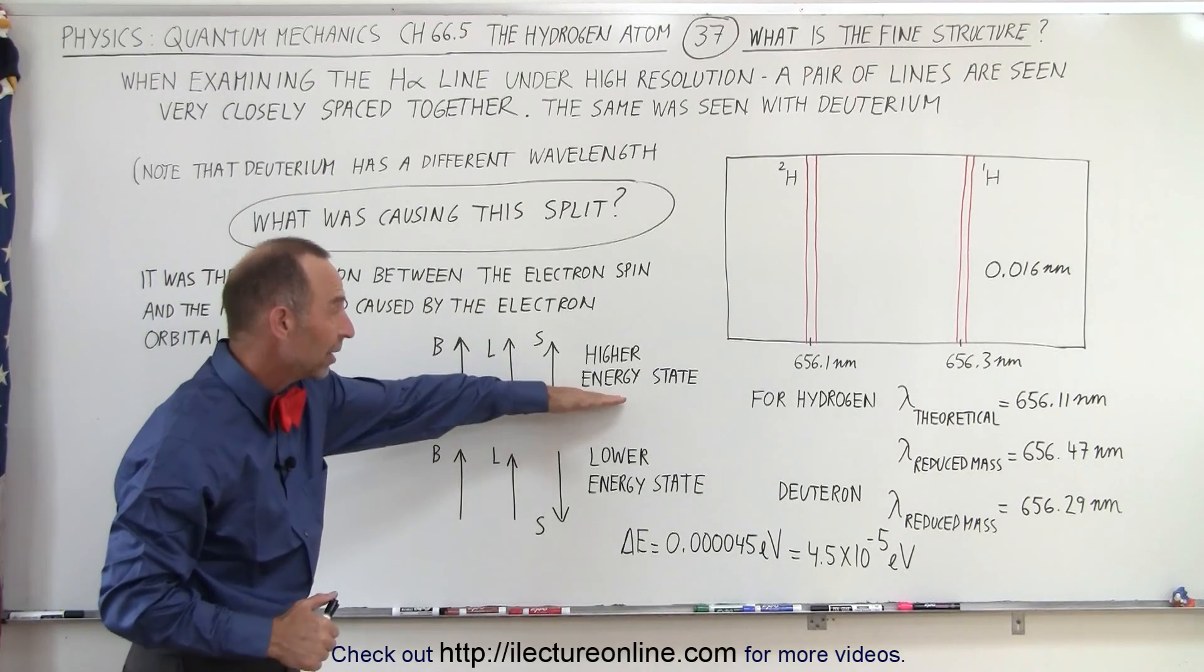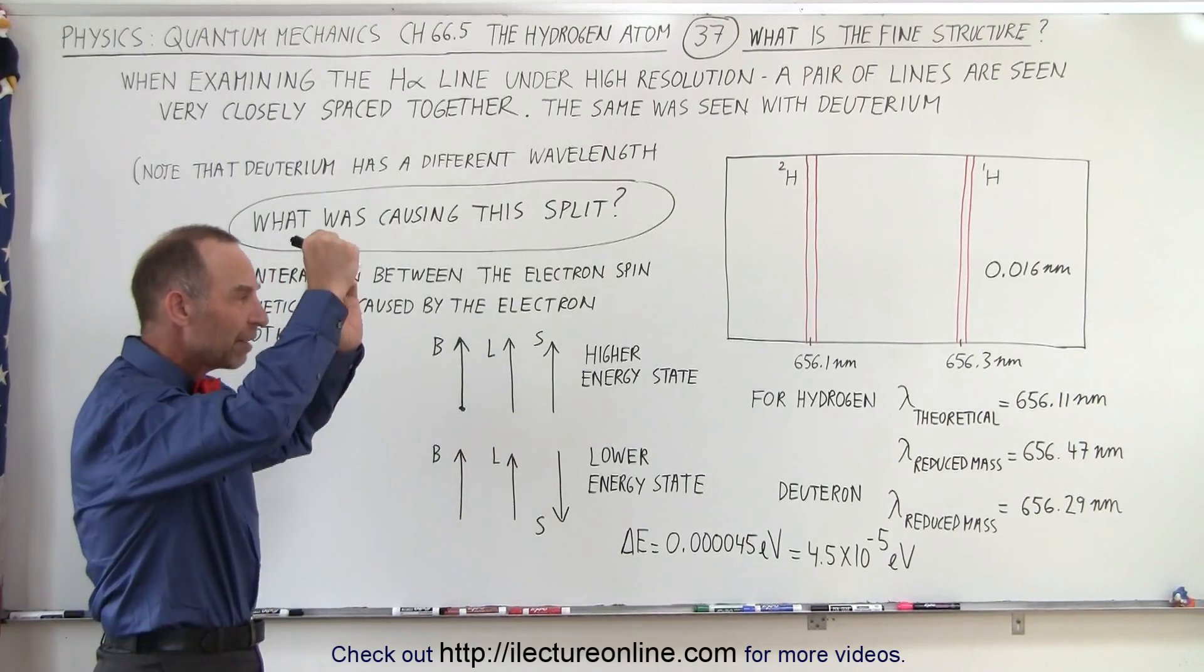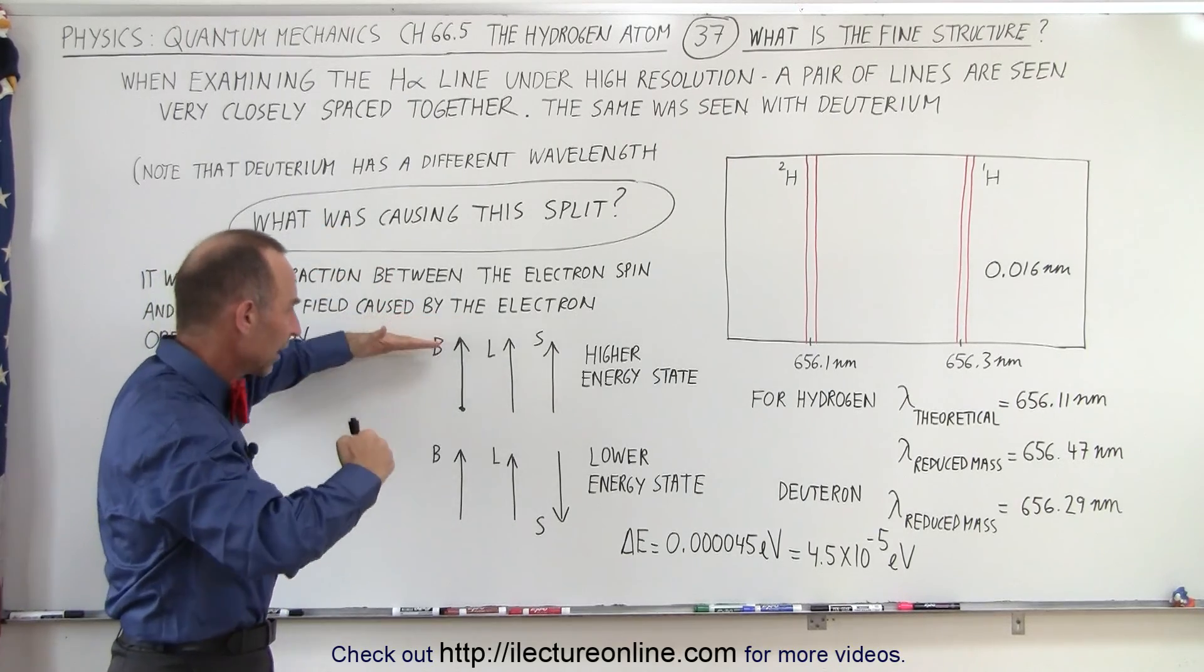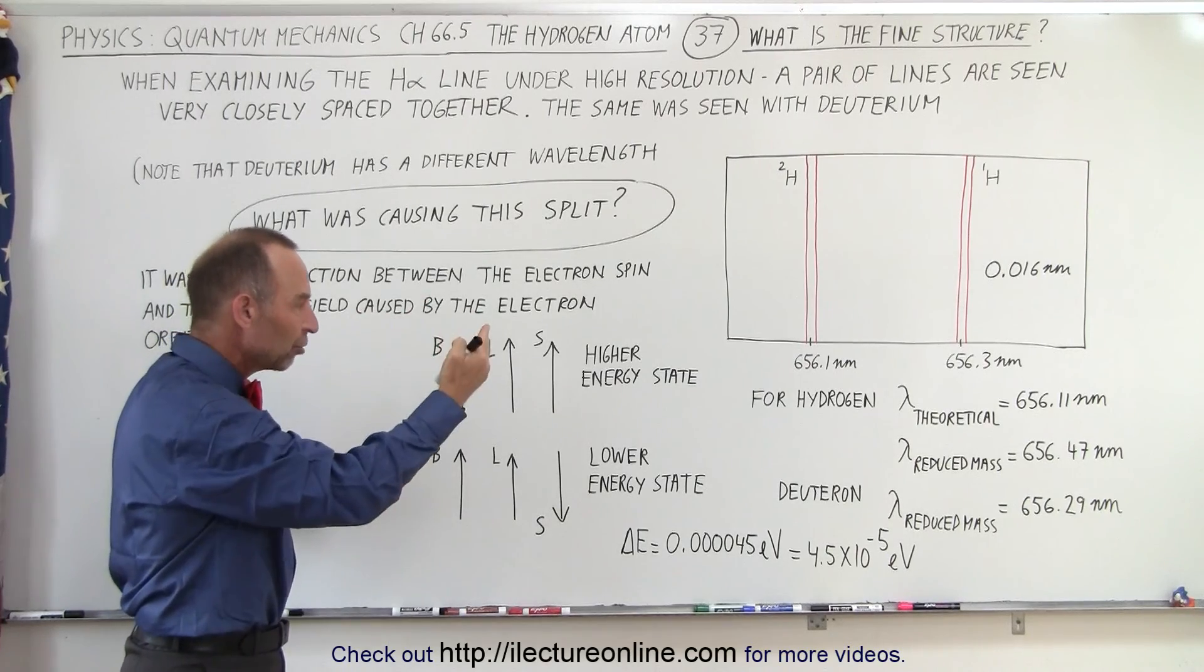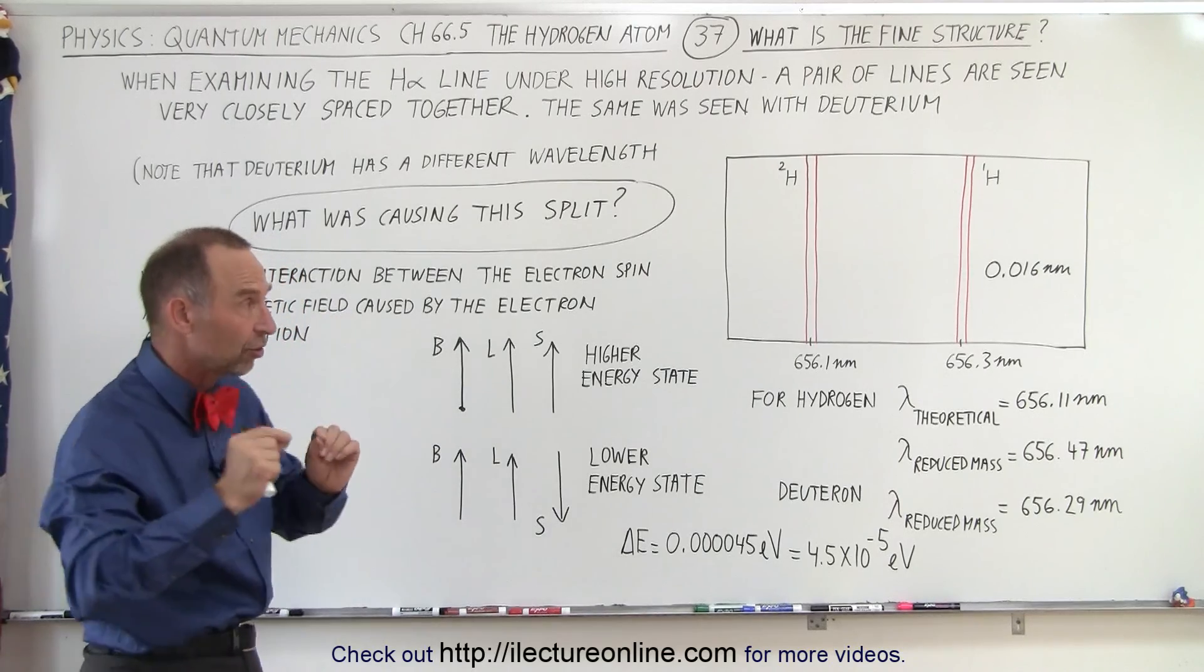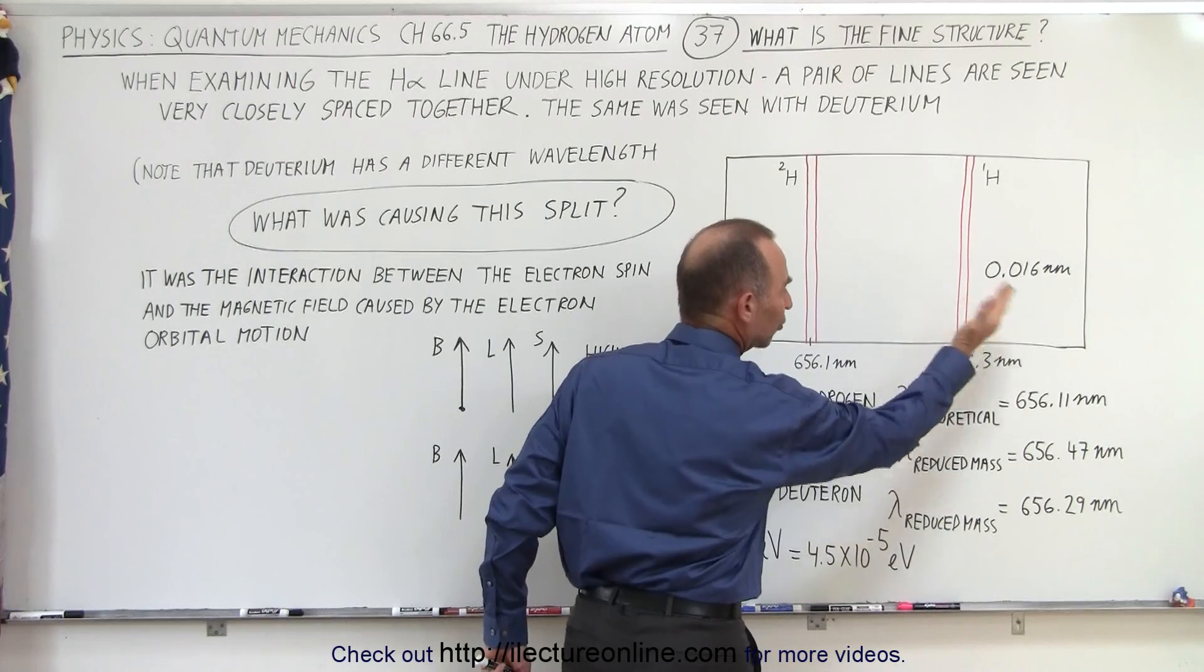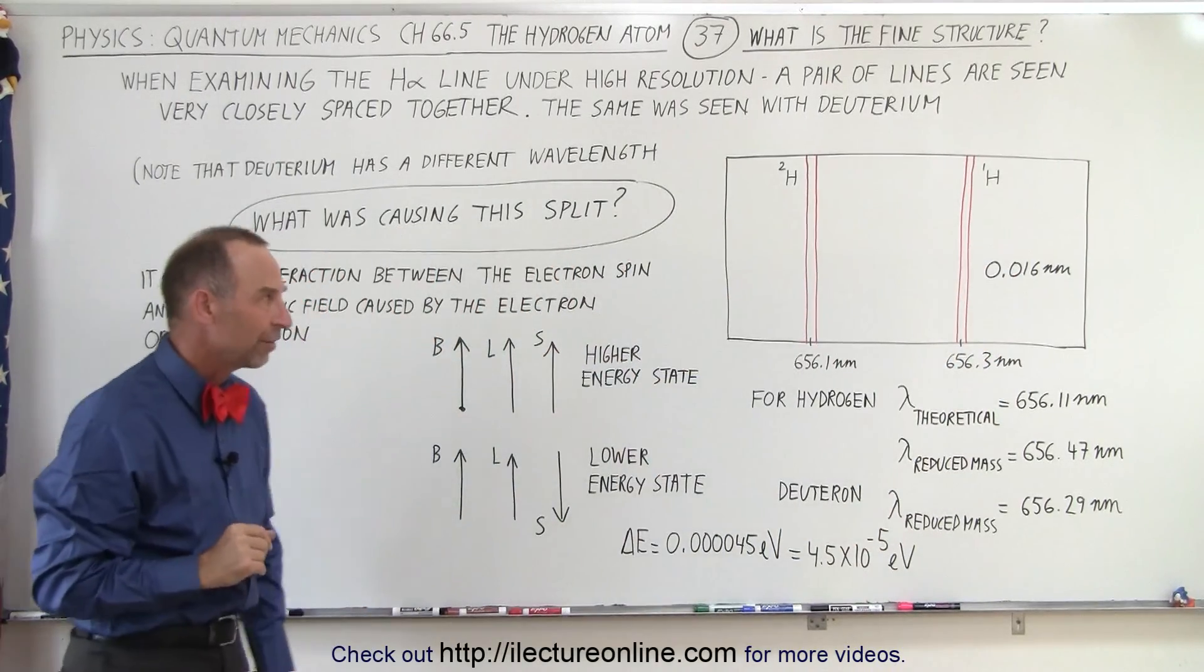This ends up being a higher energy state, this ends up being a lower energy state. So depending upon from which point, from which interaction the electron jumps from one level to another, if it jumps from a spin up condition versus spin down condition, there's going to be a slight difference in the energy transition during that transition, which causes slight difference in the wavelength of the photon that's generated.